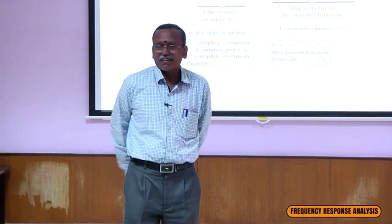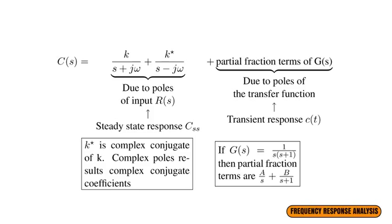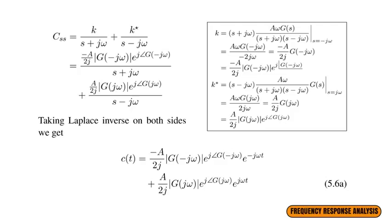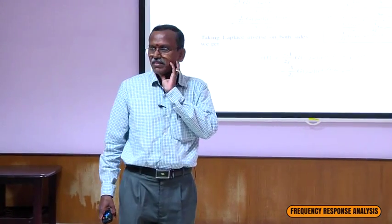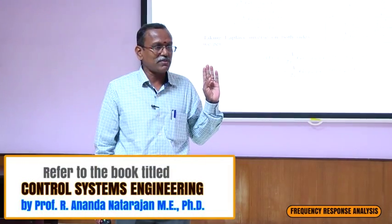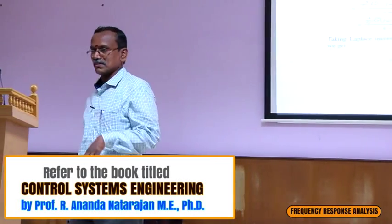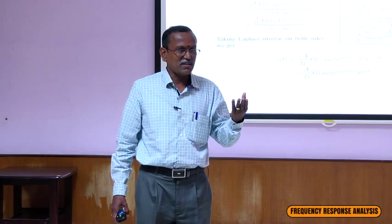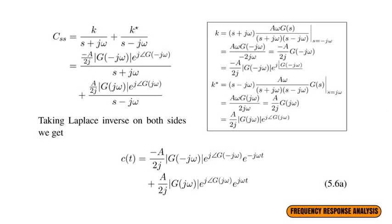The steady-state response of C(s) is K/(s + jω) + K*/(s − jω). Taking the inverse Laplace transform, we get c(t) as a function of G(jω) multiplied by an exponential. G(jω) is called the frequency transfer function — obtained by replacing s with jω in the transfer function G(s). Substituting s = jω gives us the frequency transfer function.